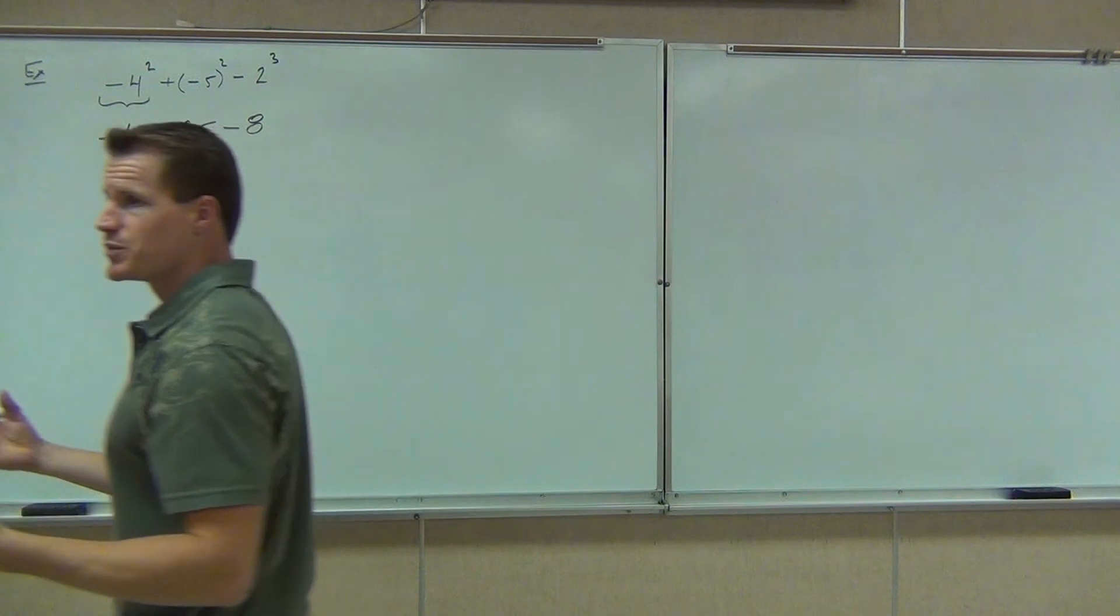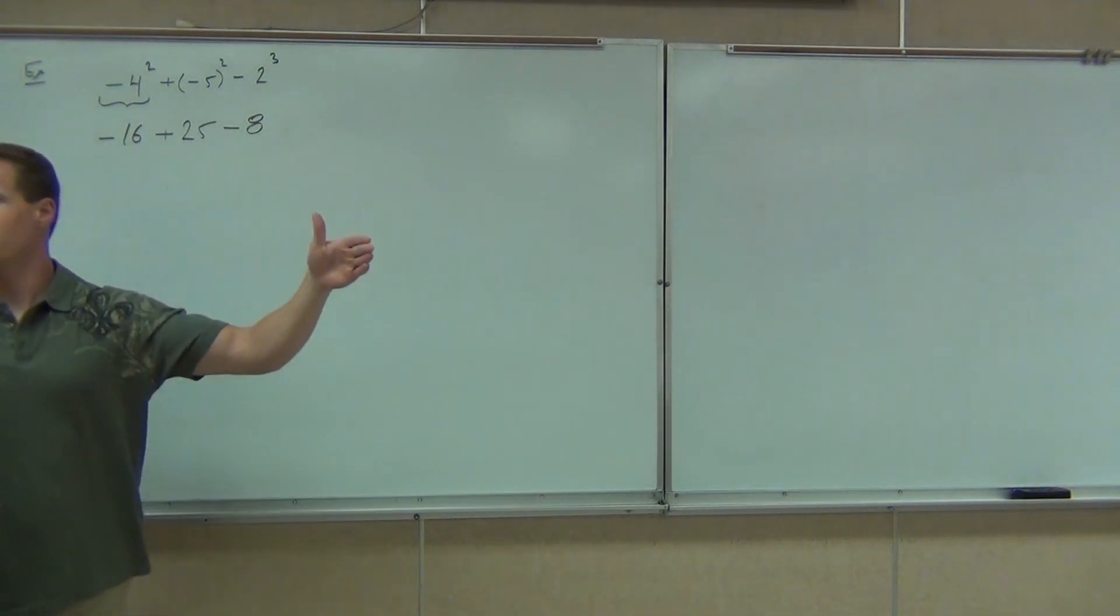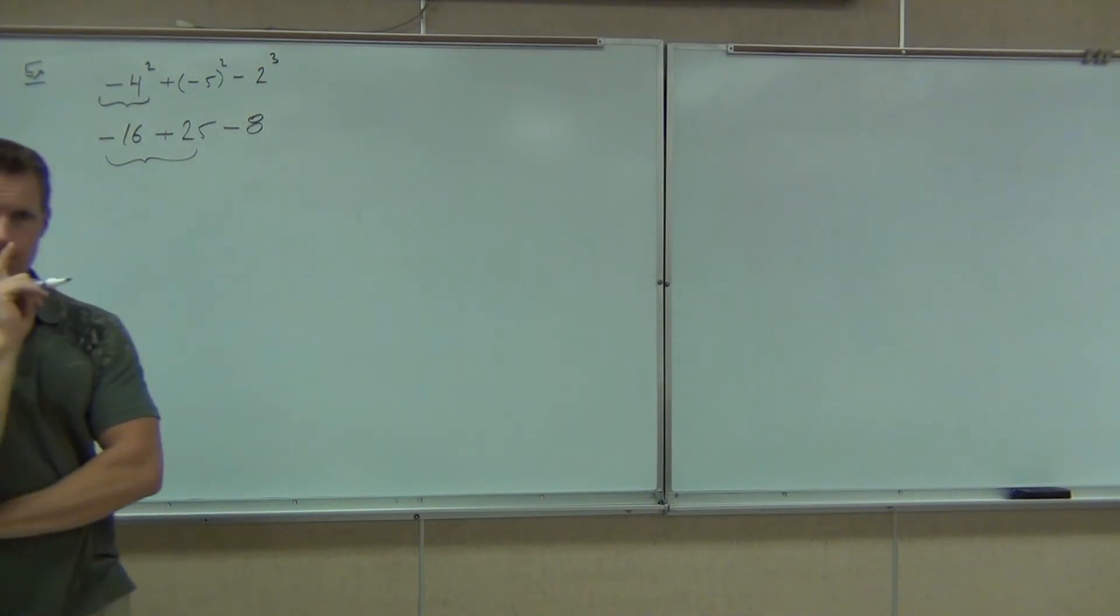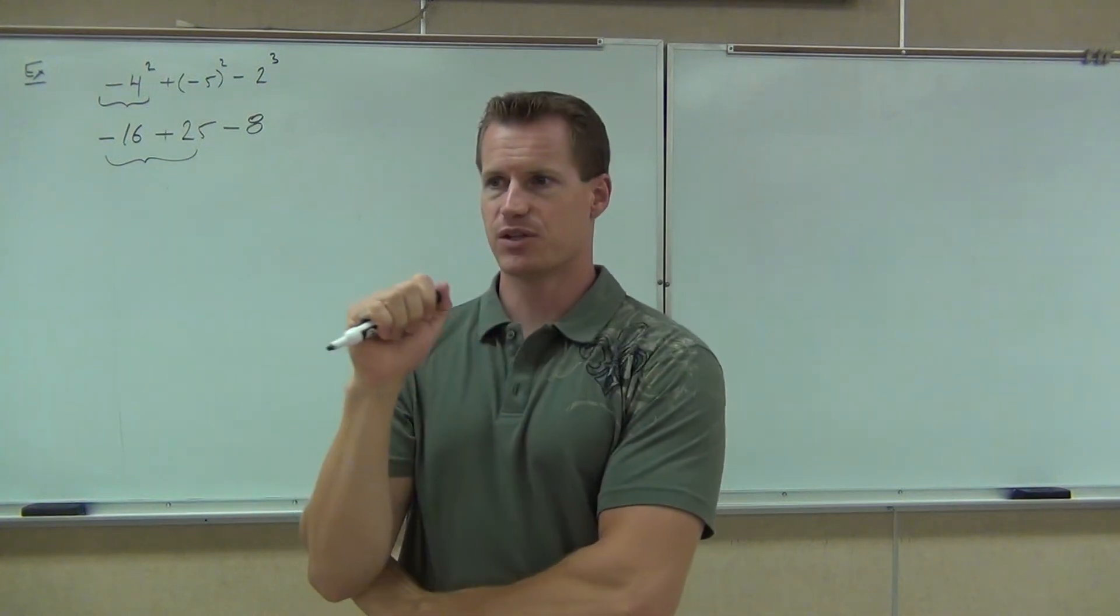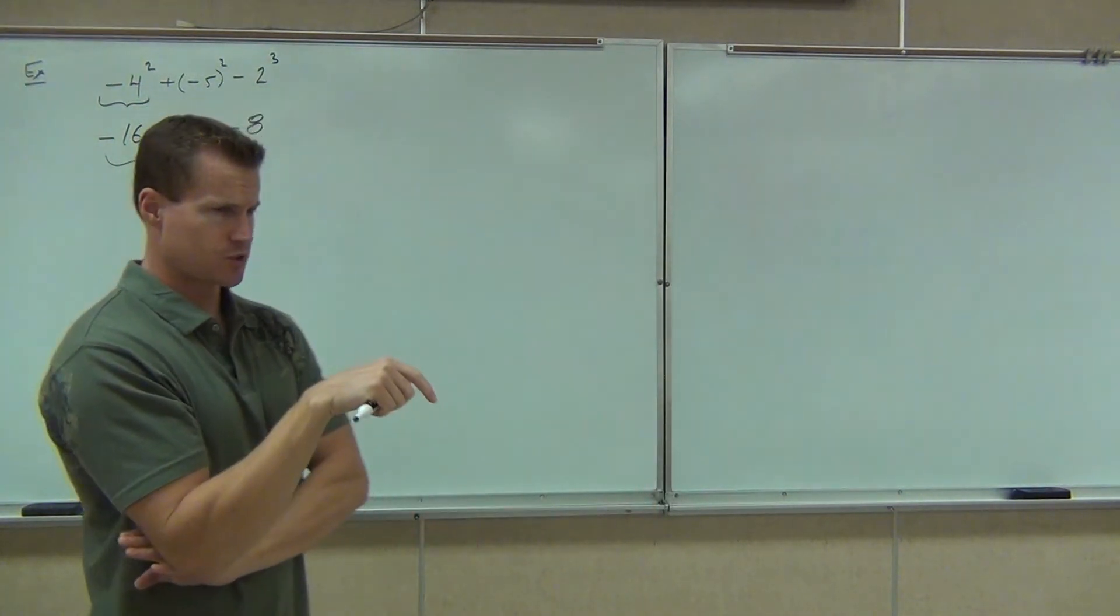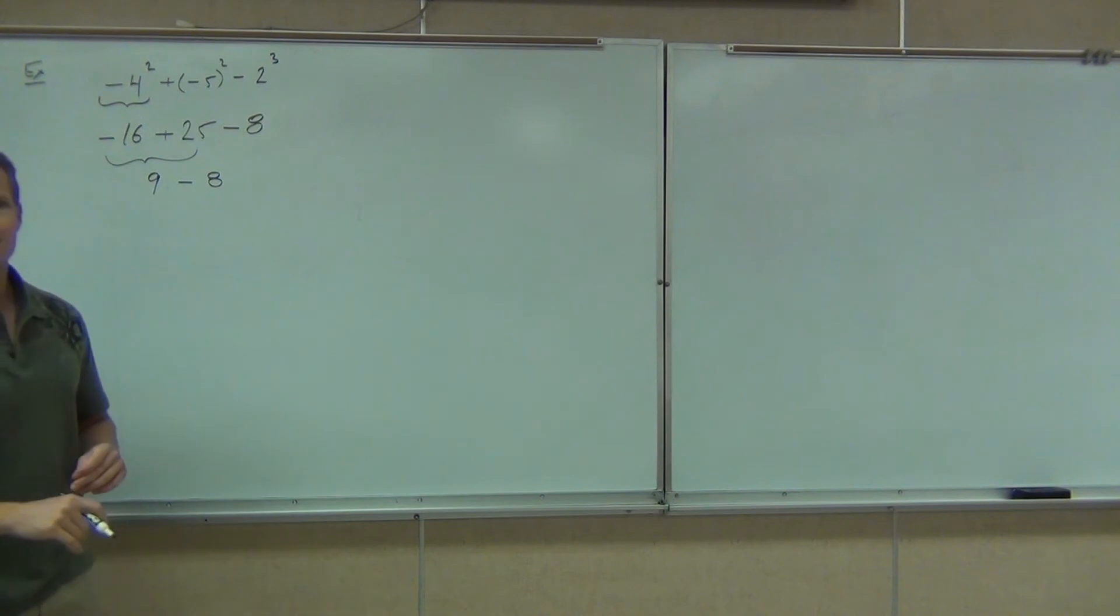So now that we've done our exponents, we would check for multiplication and division. We don't have any of that. Therefore, we go down to addition and subtraction. Let's go ahead and do this from left to right. Addition and subtraction of these two numbers is how much? How much? 48. 9. Let's use our addition rules. Are the signs the same or different? Different. That means you're going to add or subtract. Keep the sign of the bigger number. How much are you going to get? 9. 9.